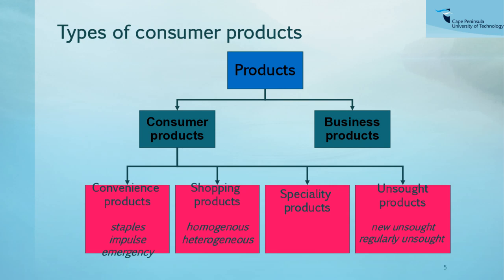Emergency products are purchased immediately when you have a crisis or unexpected need — for example, a car breakdown where you call the quickest towing service without shopping around, or buying personal care products or medications at an airport because you forgot them. Price is not particularly important in an emergency; you just want to resolve the situation quickly.